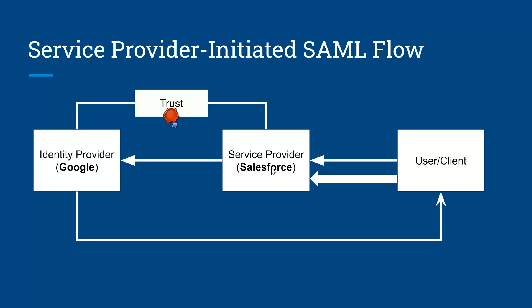Once the service provider receives the SAML response, it validates it using the trust established between the identity provider and the service provider, confirming it is coming from a validated source. Once that is done, it allows the user to access the service provider. This is how the service provider initiated SAML flow works.